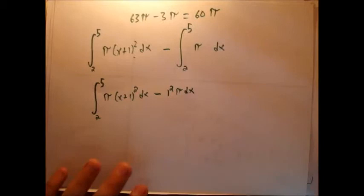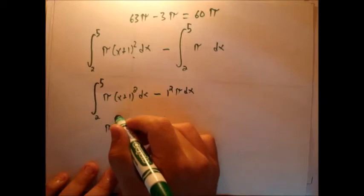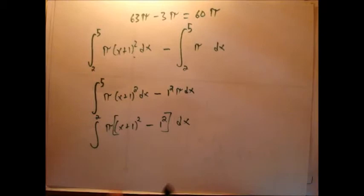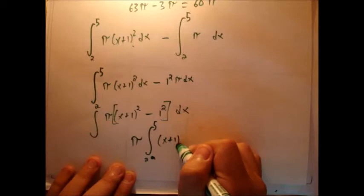So we're left with pi x plus 1 squared minus 1 squared, and the dx right here, of course the integral. Now we see how this pi is just a constant, we can actually take it up, and we're left with, and I'm going to write it in this case, 2 to 5, we're left with x plus 1 squared minus 1 squared dx.